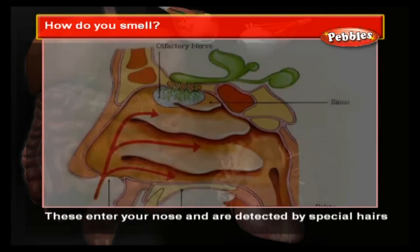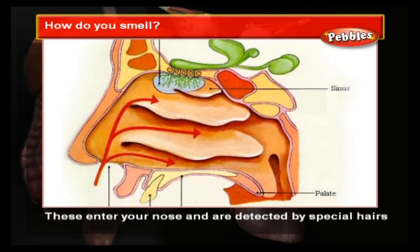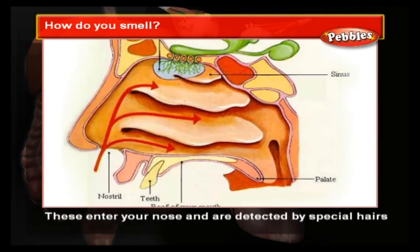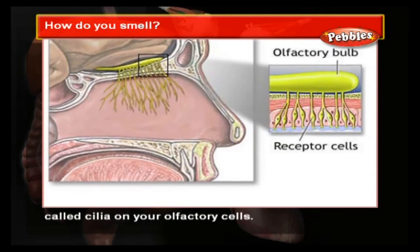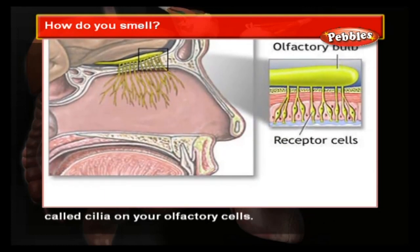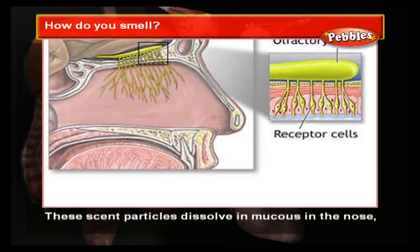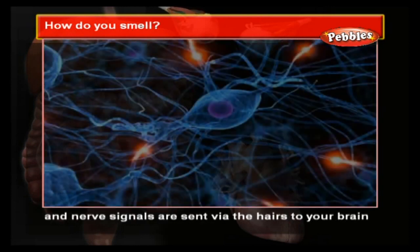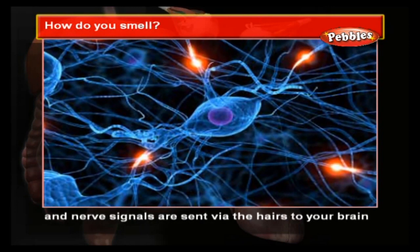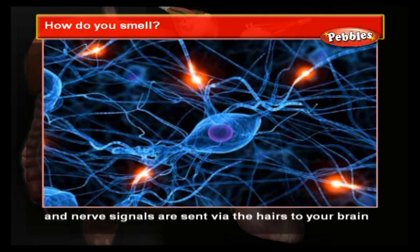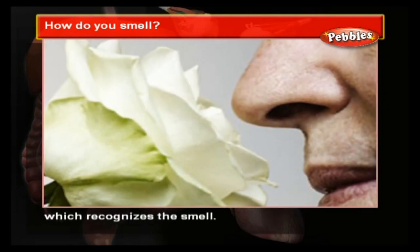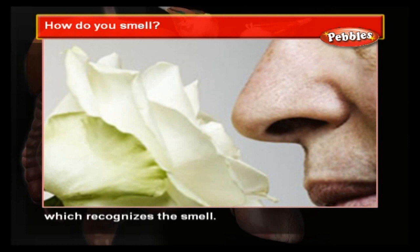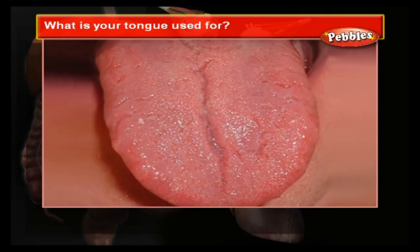How do you smell? Smells consist of small particles called odorants. These enter your nose and are detected by special hairs called cilia on your olfactory cells. These scent particles dissolve in mucus in the nose, and nerve signals are sent via the hairs to your brain, which recognizes the smell.